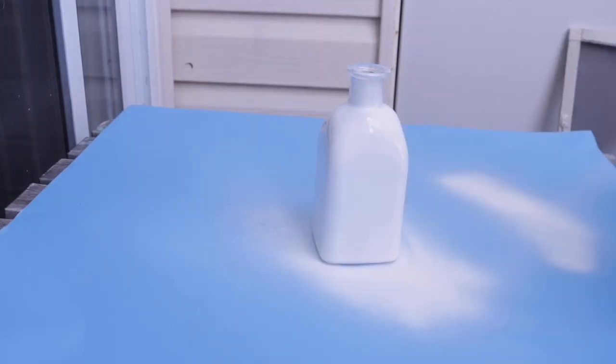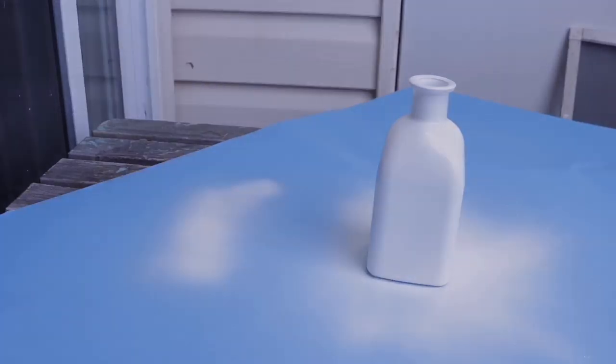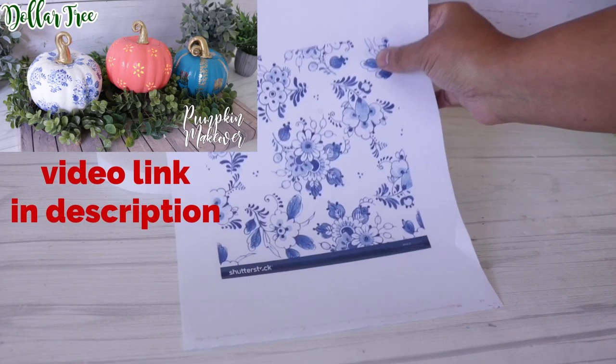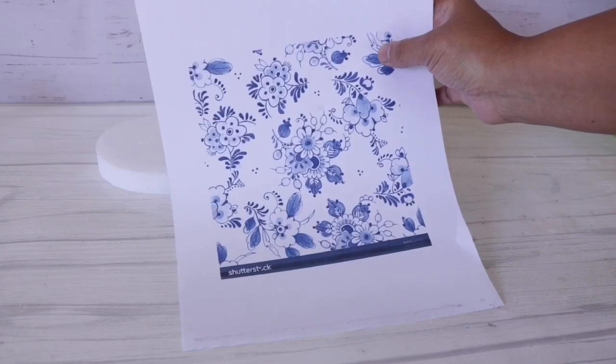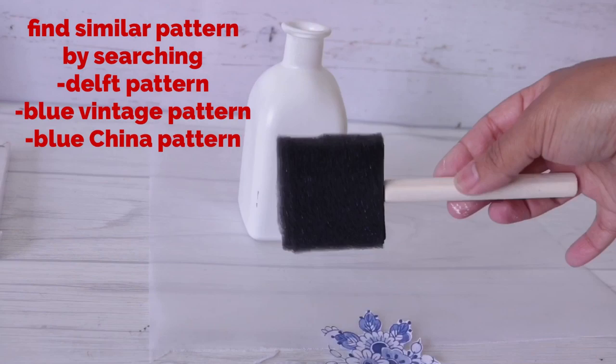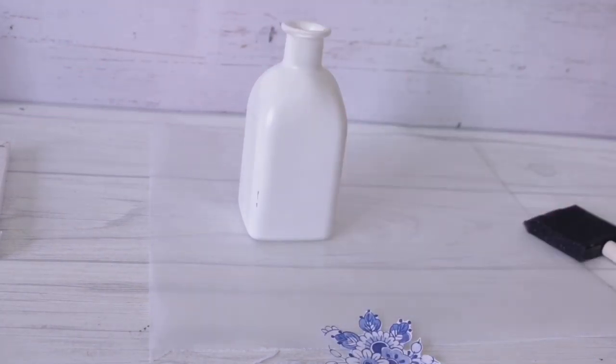You can also just use chalk paint but I already had this on hand. Instead of moving it with your fingers, you can just take the poster board that's underneath. I wasn't thinking, but that would have made my life a little easier. Now I'm going to use the same pattern I did for my pumpkins. I had an extra sheet and cut it down and used a foam brush and Mod Podge from Dollar Tree.